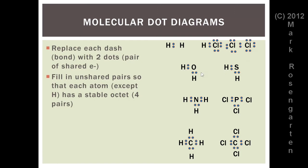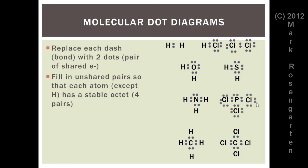Oxygen has two shared pairs and needs two unshared pairs to complete the stable octet. Same with hydrogen sulfide. With ammonia, the nitrogen has three shared pairs of electrons, so it requires a fourth unshared pair to make a stable octet. Same with phosphorus trichloride, except that the chlorines also each need three unshared pairs. Those are the bonds and the extra unshared pairs necessary to make stable octets around each atom.